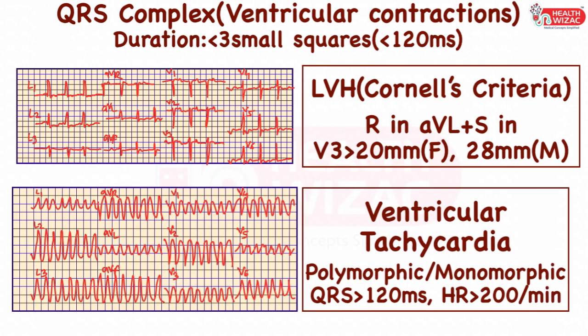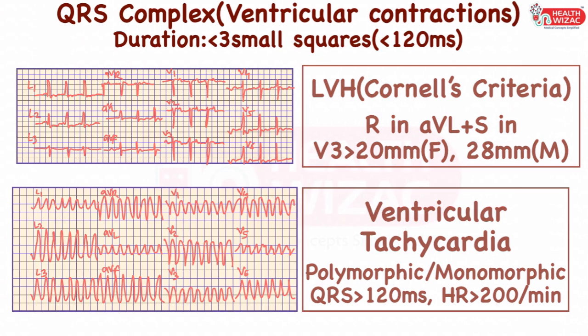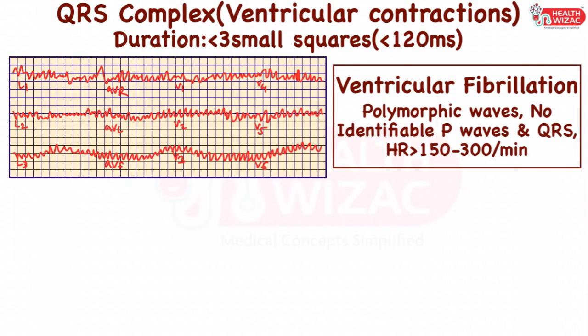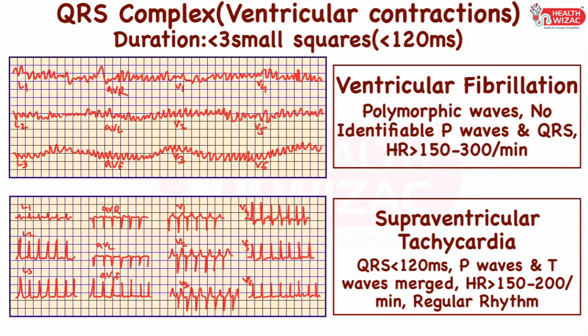If ECG shows polymorphic or monomorphic broad QRS complex with duration more than 120 milliseconds and heart rate more than 200 per minute, it is labeled as ventricular tachycardia. If polymorphic ECG waveforms are present with no identifiable P wave or QRS complex and heart rate of approximately 150 to 300 per minute, it is ventricular fibrillation. If ECG shows narrow QRS complex with heart rate of 150 to 200 per minute, where P and T waves are merged and rhythm is regular, it is supraventricular tachycardia.